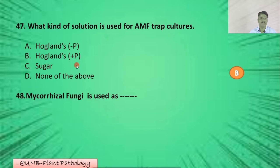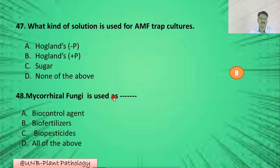Question number forty-eight: Mycorrhizal fungi is used as — A: biocontrol agent; B: biofertilizers; C: biopesticides; D: all of the above. The correct answer is D: all of the above — it is used as a biocontrol agent, biofertilizer, and biopesticide.